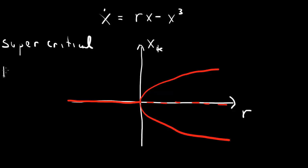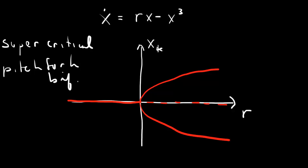It's called a pitchfork bifurcation because the diagram looks like a pitchfork — the middle prong and two side prongs. It's called supercritical because the prongs lie above the critical point. The bifurcation point is sometimes called the critical point, and when the prongs lie above it, we call it a supercritical pitchfork bifurcation.